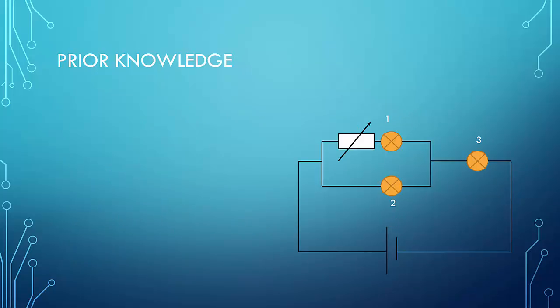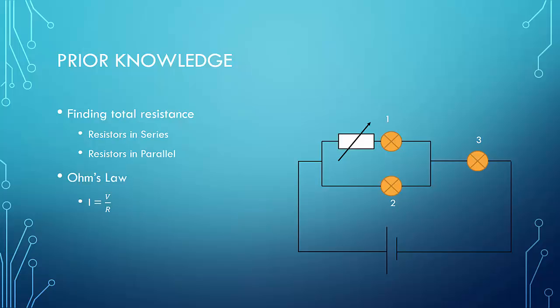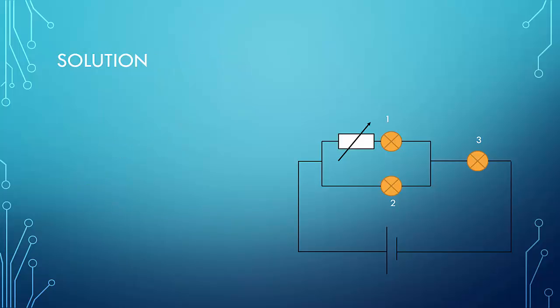I will assume that you have a bit of prior knowledge. You need to know how to find the total resistance for resistors in series and resistors arranged in parallel. I will also assume that you know Ohm's law, where I equals V over R. So the first step is to calculate the resistance of the circuit.